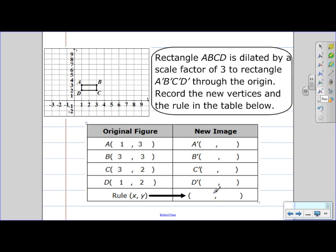So we know that our scale factor is 3. So we know that we're going to be taking 3 and multiplying that times our x values, and 3 and multiplying that times our y values.